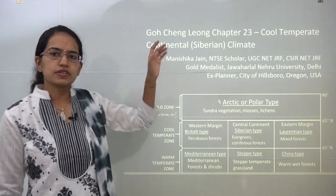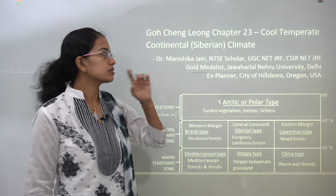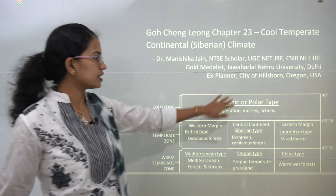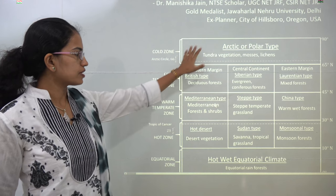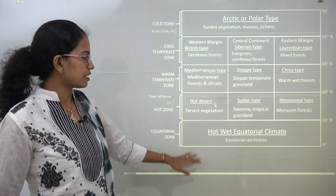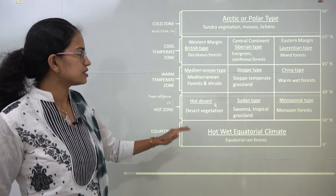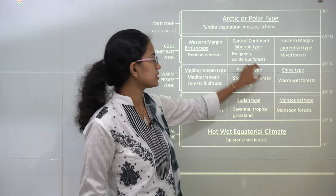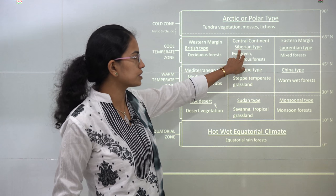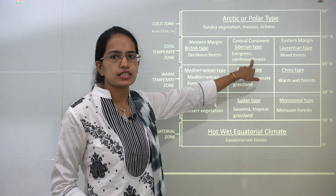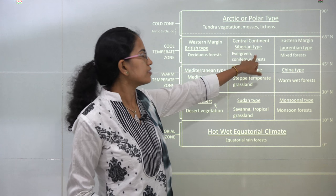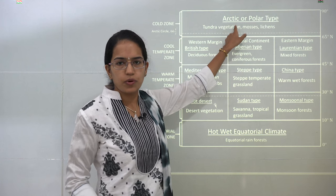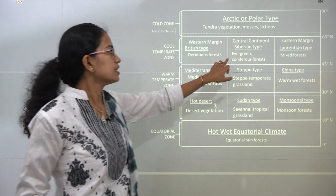Welcome back. We will continue with the Gauchy-Liong. Today we will be covering chapter 23. When we were talking about the climate regions, we have already covered all these regions. We are moving towards the Siberian region today, and we would be left with just two remaining: Laurentian and the polar climate.